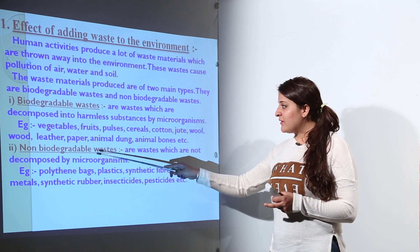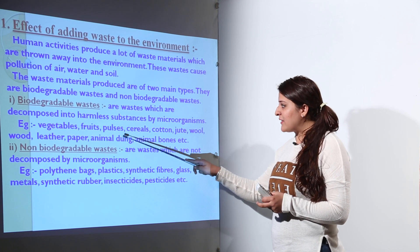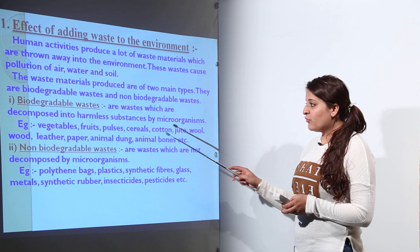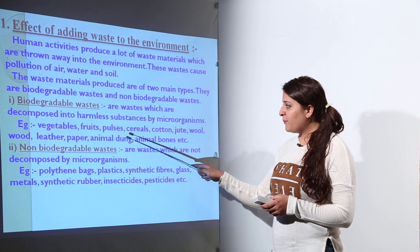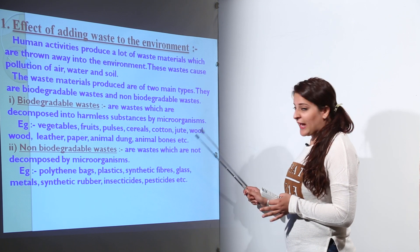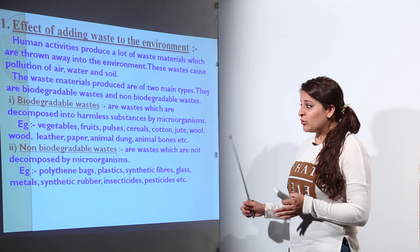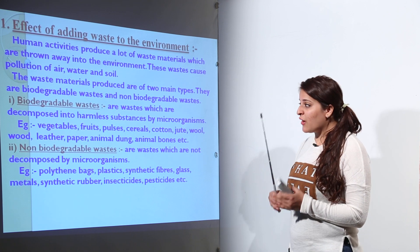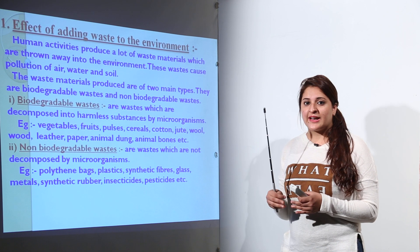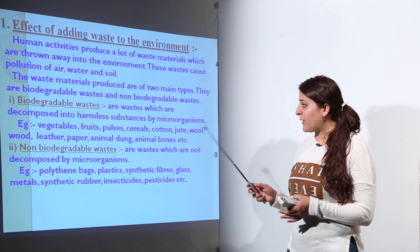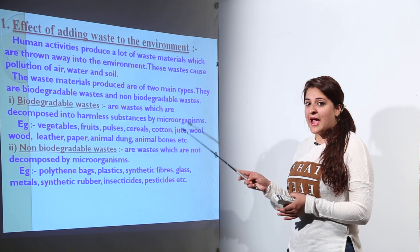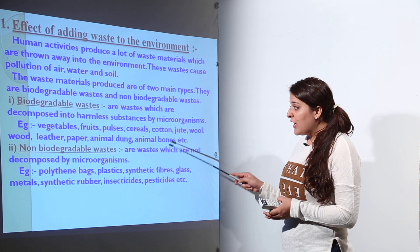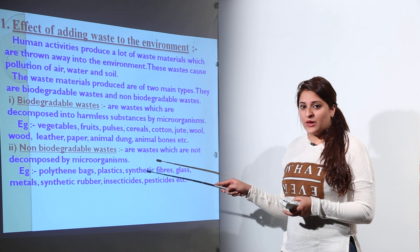Examples of biodegradable waste include vegetables, fruits, pulses, cereals, cotton, jute, wool, wood, leather, paper, animal dung, and animal bones. So these are all examples of biodegradable waste — harmful substances that can be easily decomposed by the action of microorganisms and converted into harmless substances.